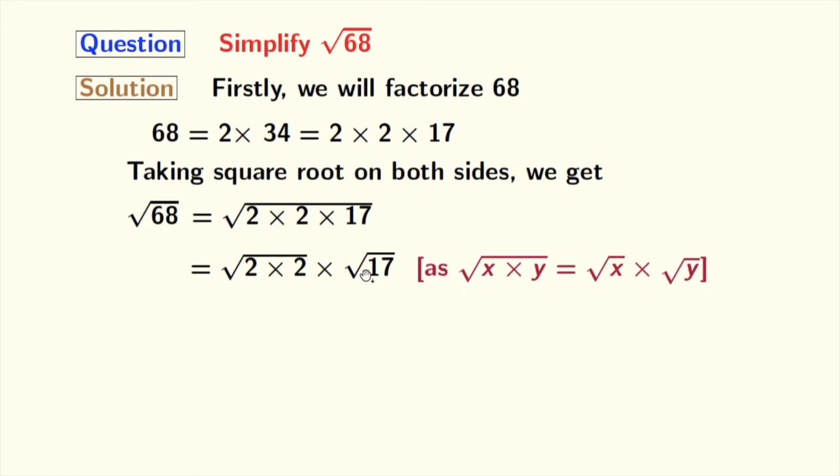Here we have used the rule: square root of x times y equals square root of x times square root of y. Here, x is 2 times 2 and y is 17.